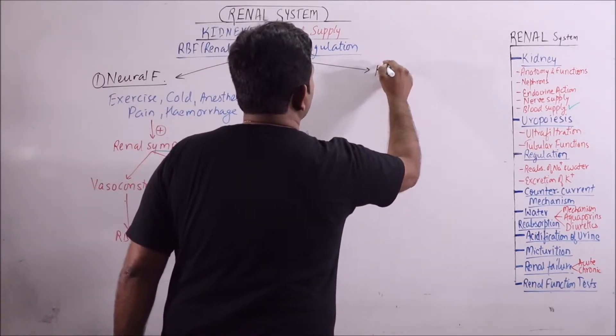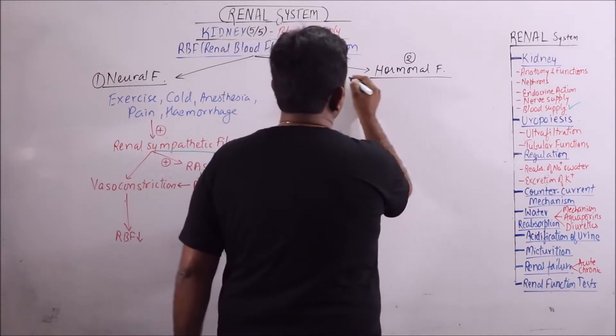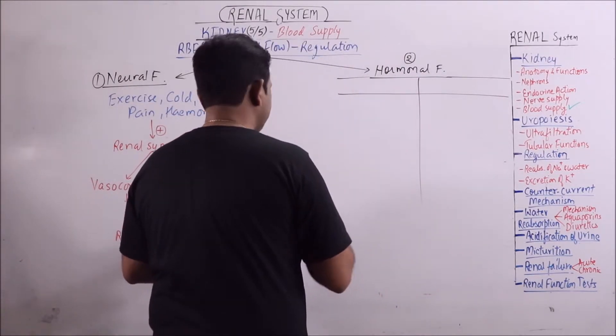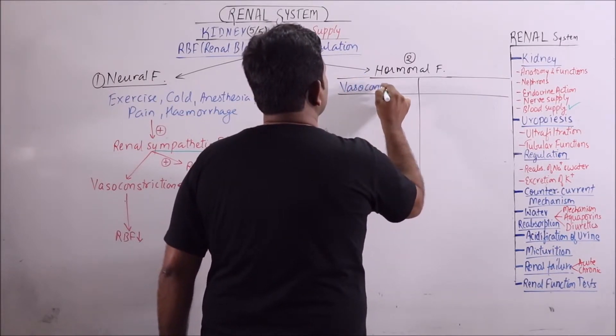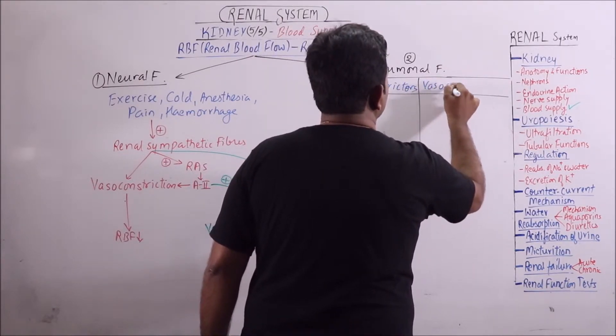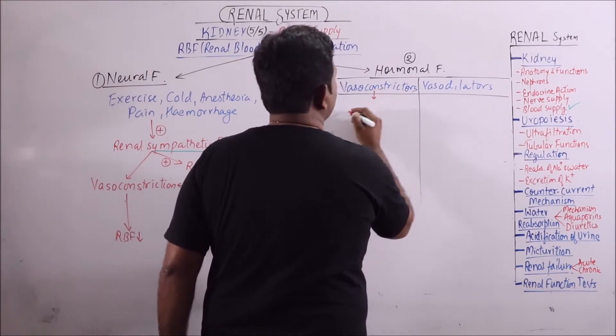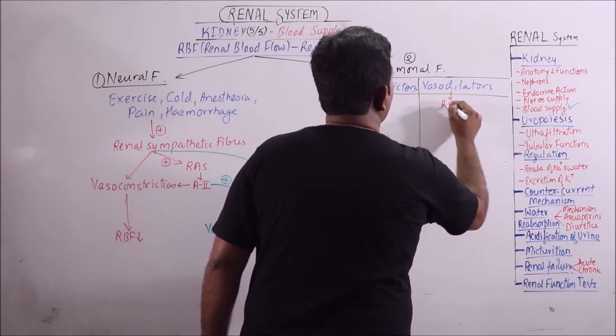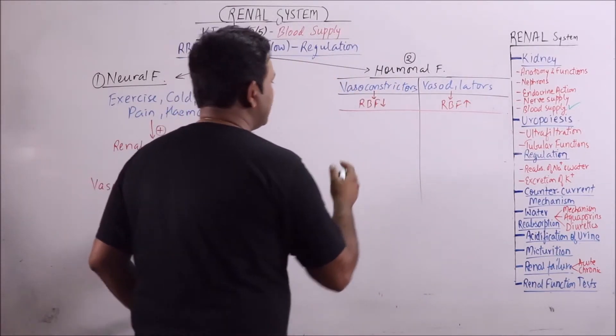Now second is hormonal factors. We will divide the hormonal factors into two categories: those causing vasoconstriction and those causing vasodilations. So here vasodilators. We should know that vasoconstrictor will decrease the RBF and vasodilator will increase the RBF.